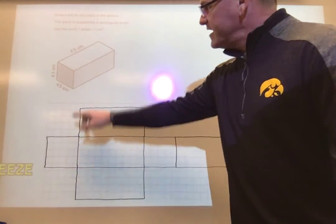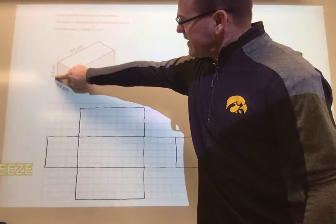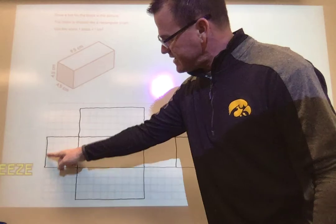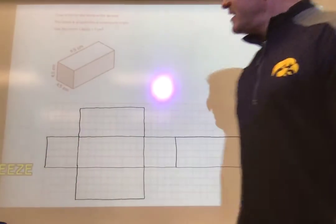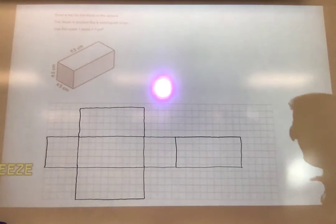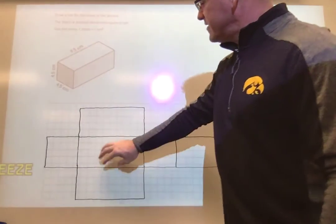So I did it this way and started over here with the front and the back, and it's four and a half by four and a half. So I just went down four and a half, over four and a half, and made that square first.